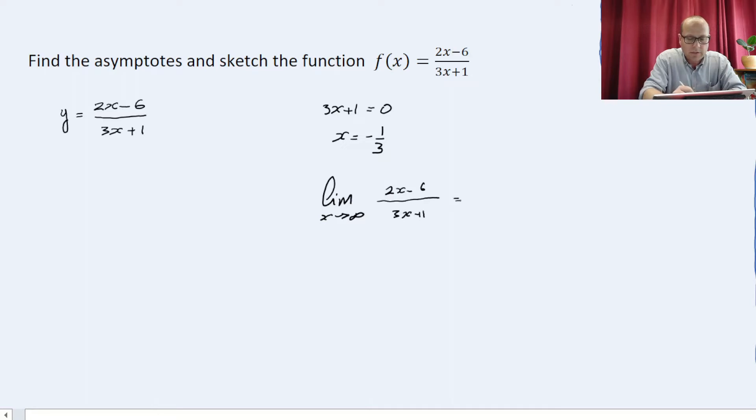So that's equal to the limit, whenever x tends to infinity, I'm dividing each term of the quotient by x, so that will be 2 minus 6 over x over 3 plus 1 over x. These two terms, whenever x tends to infinity, they tend to zero. So the horizontal asymptote y is equal to 2 over 3.